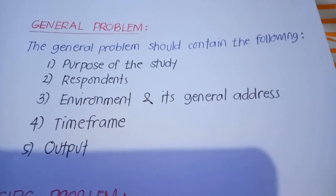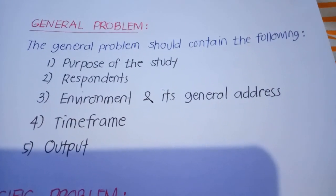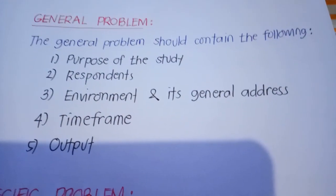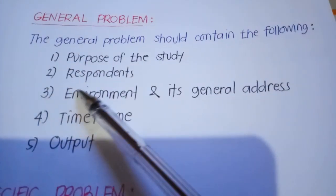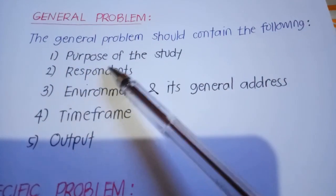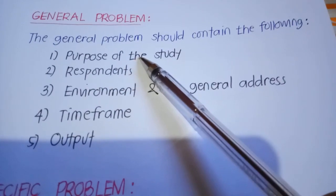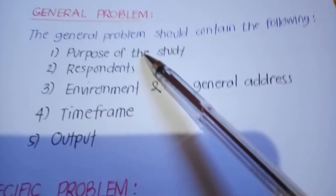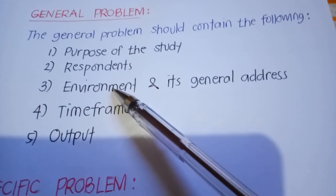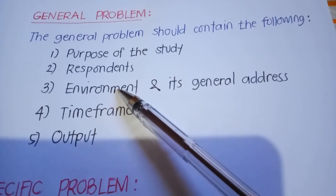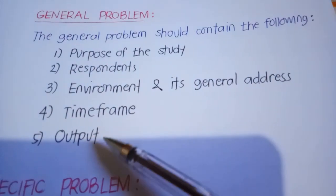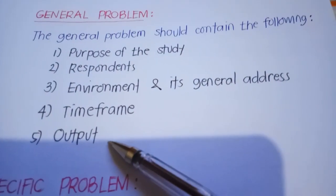How do we create the general statement of the problem? The general problem should contain the following: first, the purpose of the study; second, the respondents; third, the environment and its general address; fourth, the timeframe; and finally, the output.